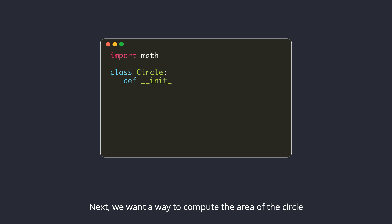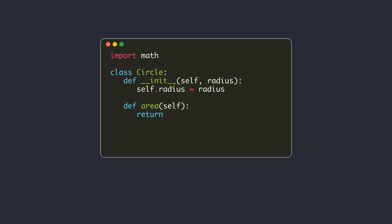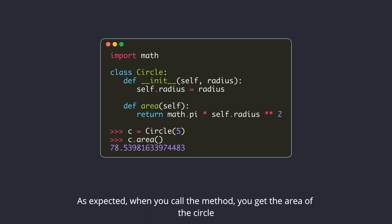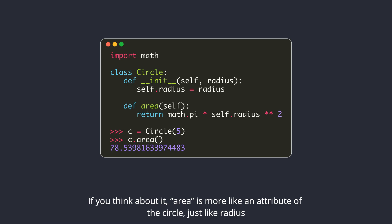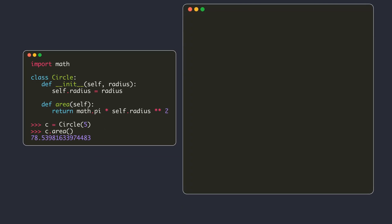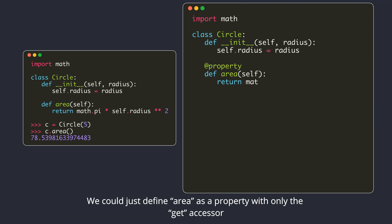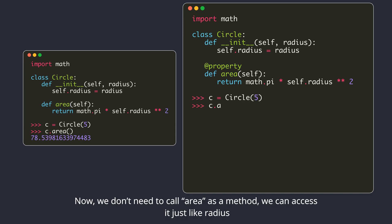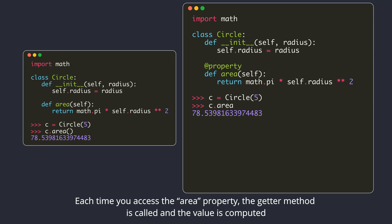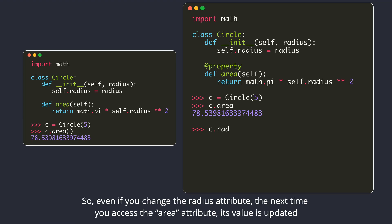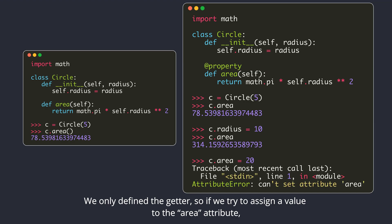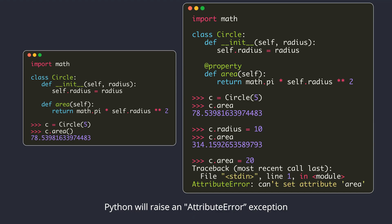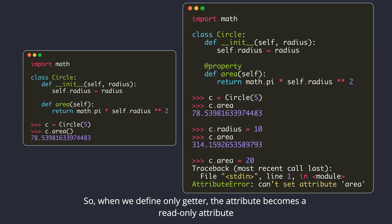Next, we want a way to compute the area of the circle. We will simply define an area method, and when you call the method, you get the area of the circle. If you think about it, area is more like an attribute of the circle, just like radius. We could define area as a property with only the get accessor. Now we don't need to call area as a method — we can access it just like radius. Each time you access the area property, the getter method is called and the value is computed. So even if you change the radius attribute, the next time you access the area attribute its value is updated. We only define the getter, so if we try to assign a value to the area attribute, Python will raise an AttributeError exception. When we define only a getter, the attribute becomes a read-only attribute. Notice that the area is computed every time we access the area attribute, even if the radius has not changed — this is inefficient.